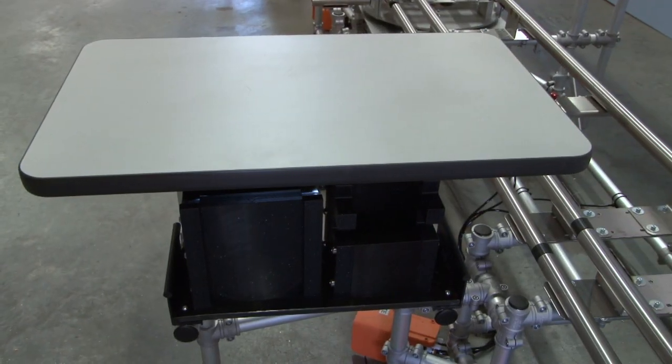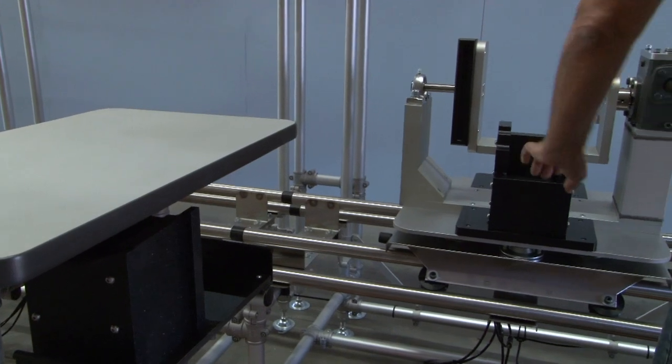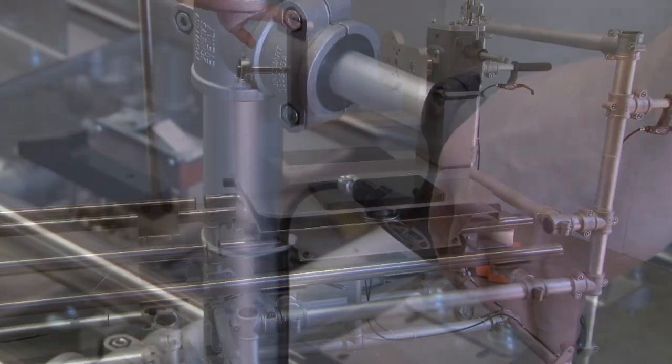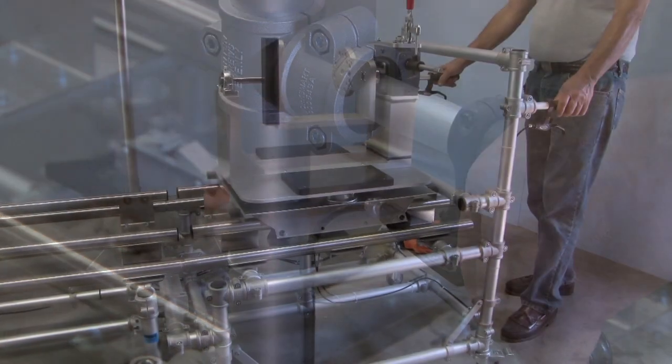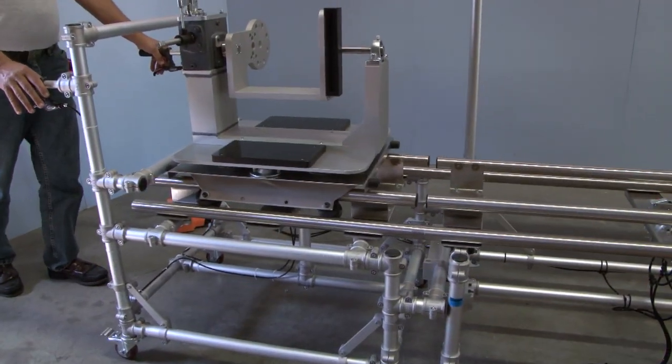A work surface with a lower shelf with quick cradle fixture storage was also incorporated to assist the assemblers. The previously mentioned reworked cart also had a dual function. It was also used to transport empty fixture carts to the head of the line.